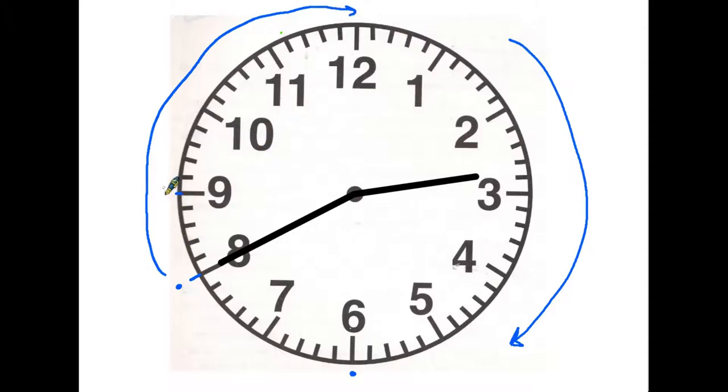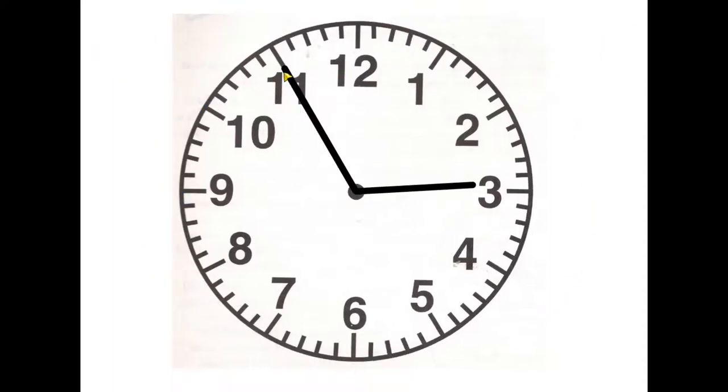So in this case from the eight we have five and ten, fifteen, and twenty minutes. Don't forget five minutes for each space. Therefore we are now at twenty minutes to the next hour. And if we look at the small hand here we can see the hand is heading towards the three, so in this case we are at twenty minutes to three.